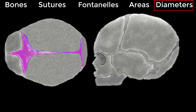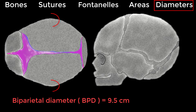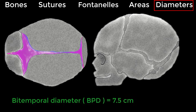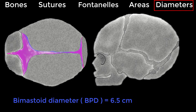Regarding transverse diameters, the most important is the biparietal diameter, extending between the two parietal eminences and measuring 9.5 cm. It is the engaging diameter in all attitudes. Other transverse diameters include the bi-temporal diameter, extending between the two ends of the coronal sutures and measuring 7.5 cm, and the bi-mastoid diameter, between the two mastoid eminences, measuring 6.5 cm.